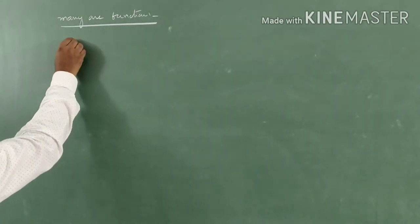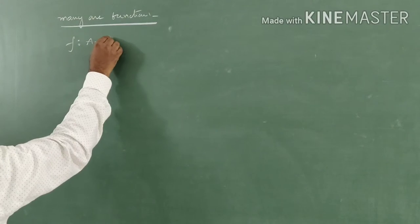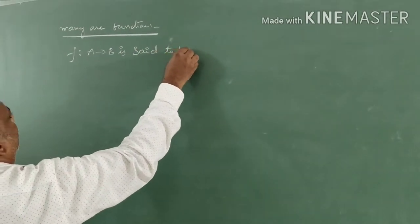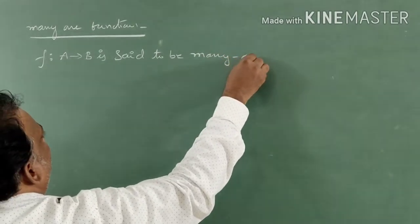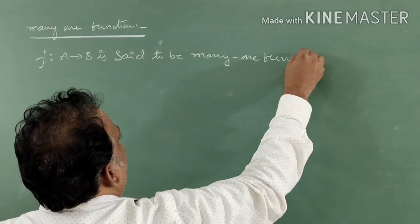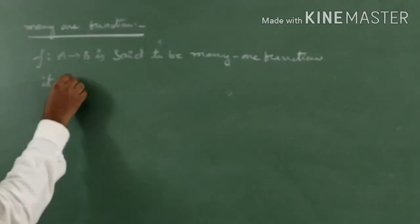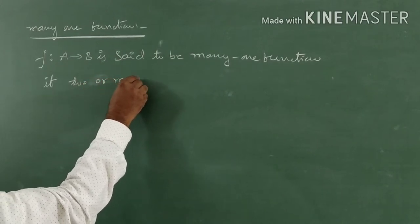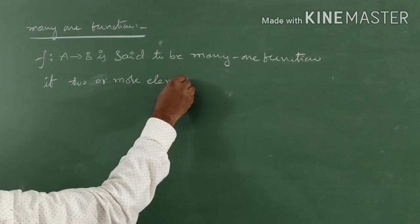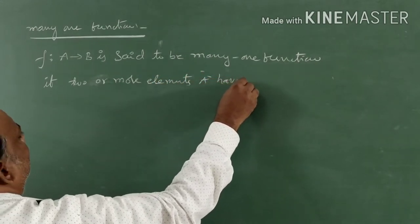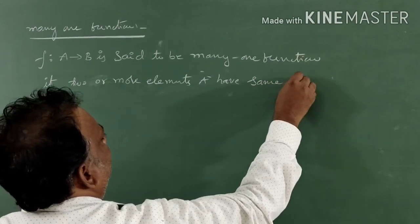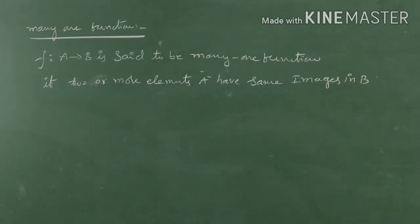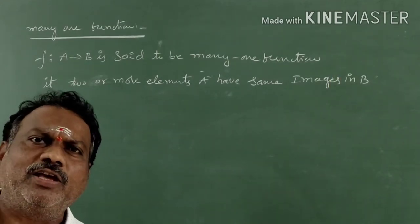So I will write the definition. F mapping from A to B is said to be a many-one function if two or more elements of A have the same images in B. For this, we also have one mathematical definition. Before that, let me give one example.